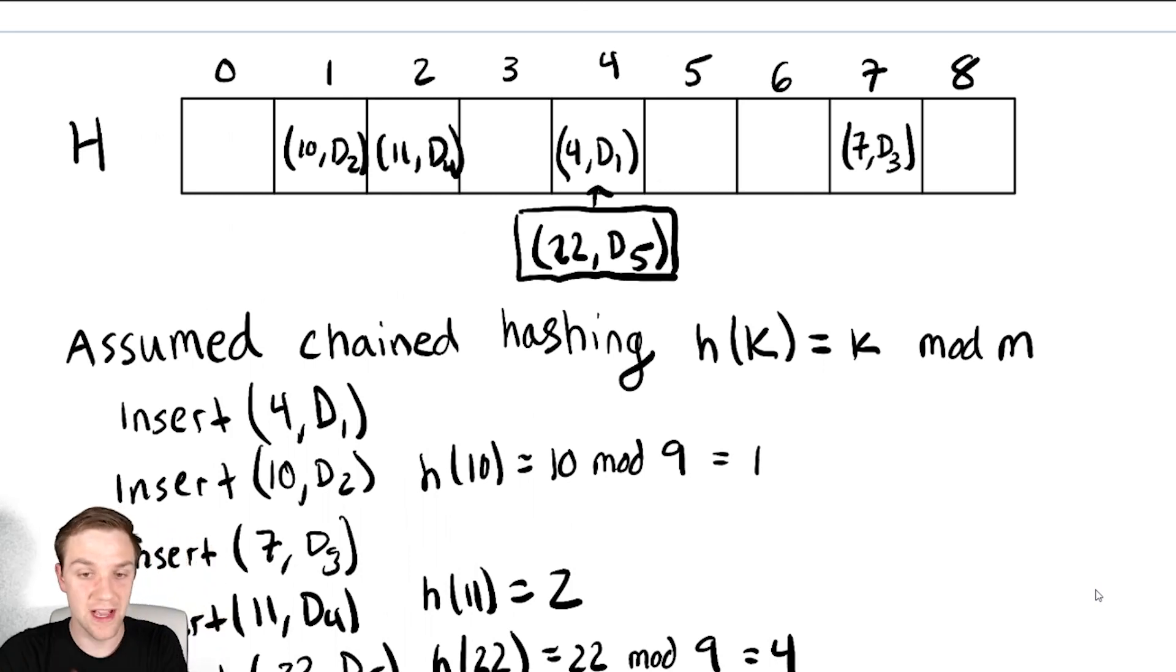There are tons of ways you could have drawn that, I drew it this way. Some people will also draw it as none of those elements I inserted are actually in the array, there'll be some sort of pointer there, and then they'll point down to 10, 11, 4, 7, and so on. But I drew it this way.